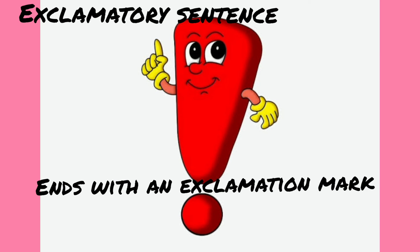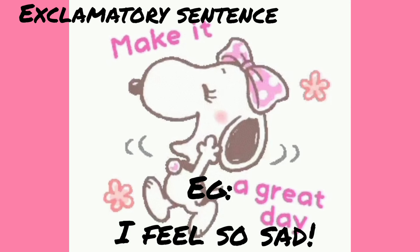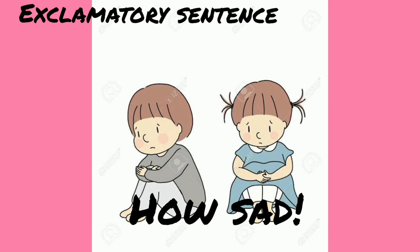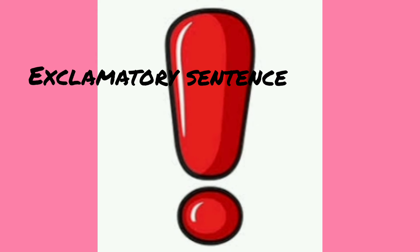The second one is exclamatory sentence. This is a type of sentence that shows strong or sudden feelings. It ends with an exclamation mark. For example: I feel so sad! Today is the best day ever! How sad! Hurray! Wow! So, the exclamatory sentences end with an exclamation mark.